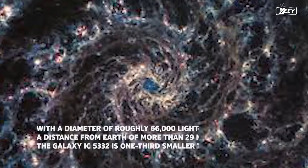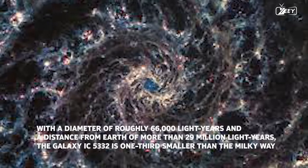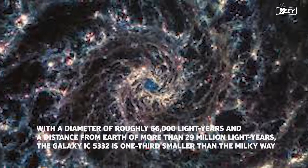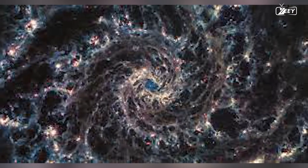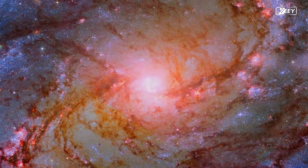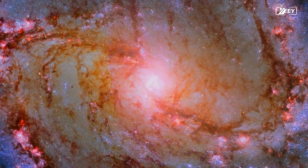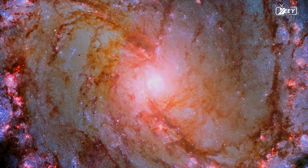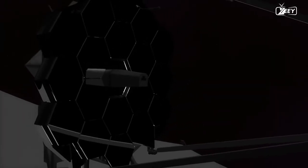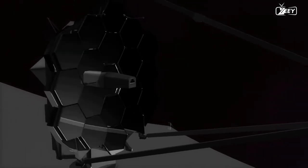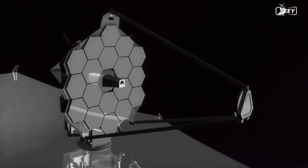With a diameter of roughly 66,000 light years and a distance from Earth of more than 29 million light years, the galaxy IC 5332 is one-third smaller than the Milky Way. It stands out because it almost precisely faces Earth, allowing us to marvel at the symmetrical movement of its spiral arms. Using MIRI, or mid-infrared instrument, James Webb studied this galaxy. The first device to reliably produce mid-infrared images as sharp as Hubble's at shorter wavelengths.